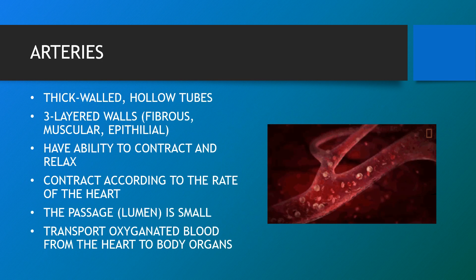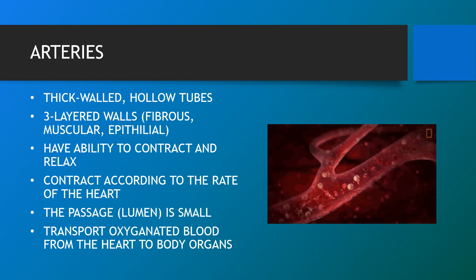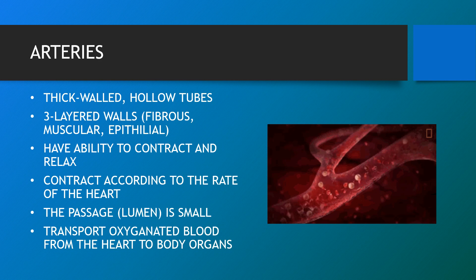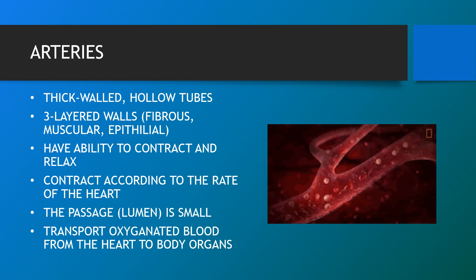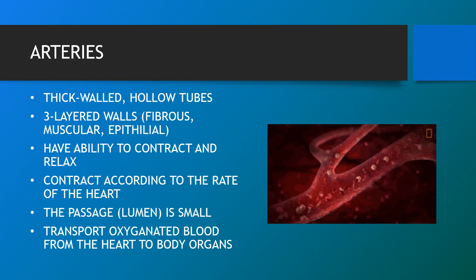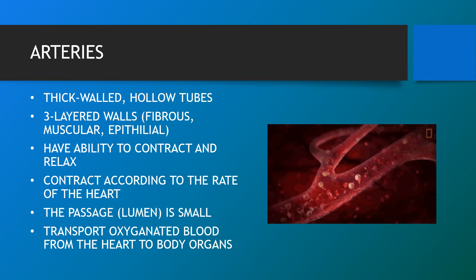Arteries are a type of blood vessel that carry blood away from the heart; in contrast, veins carry blood back to the heart. Because arteries are moving blood being pumped out by the heart, their walls are thicker and more elastic than those of veins, as the blood passes through with higher pressure. The thick elastic walls of arteries accommodate that pressure and they have the ability to contract and relax. The lumen is small and arteries transport oxygenated blood from the heart to body organs.